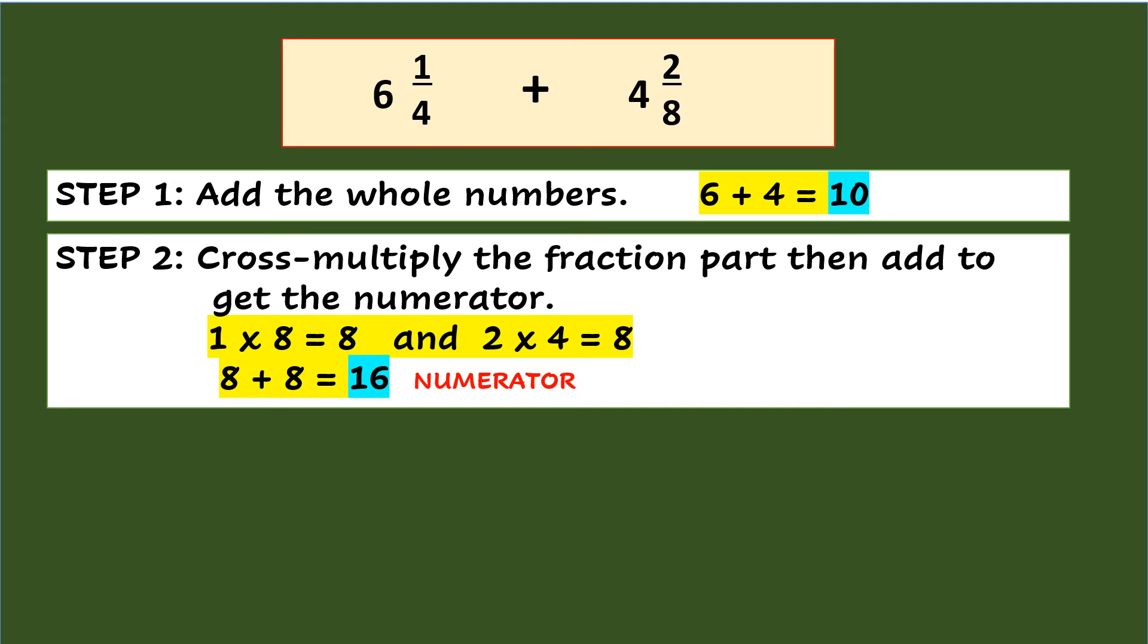Step 2, cross multiply the fraction part then add to get the numerator. So cross multiplying, you'll have 1 times 8 equals 8 and 2 times 4 equals 8. So 8 plus 8 equals 16 and that will be the numerator.